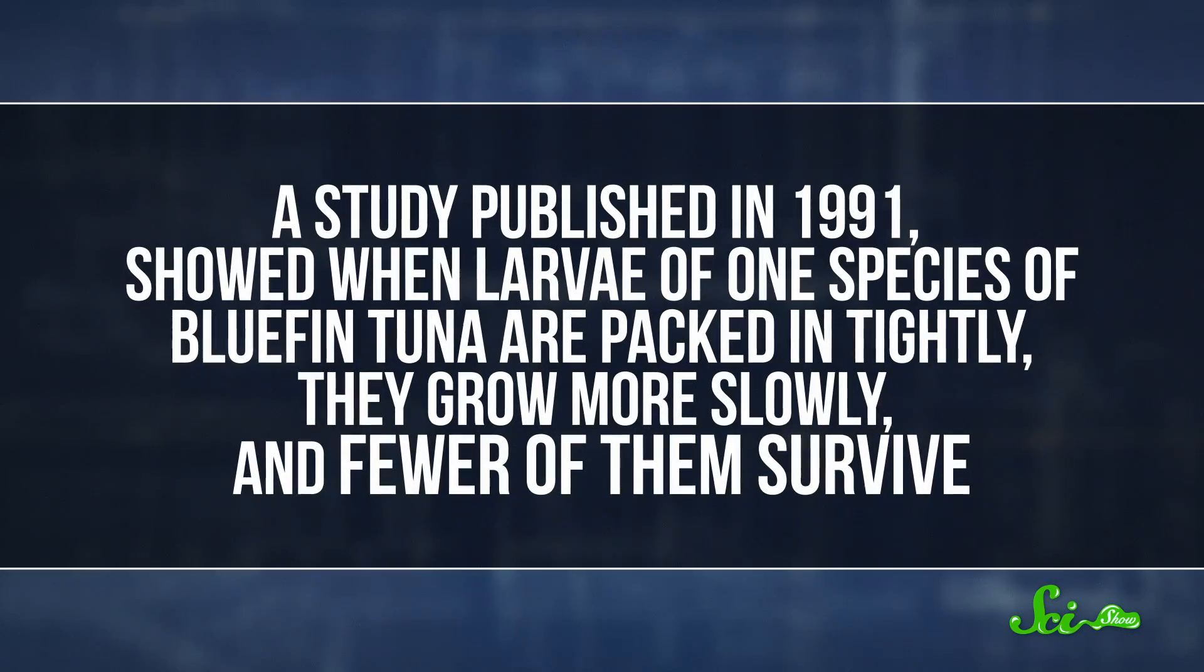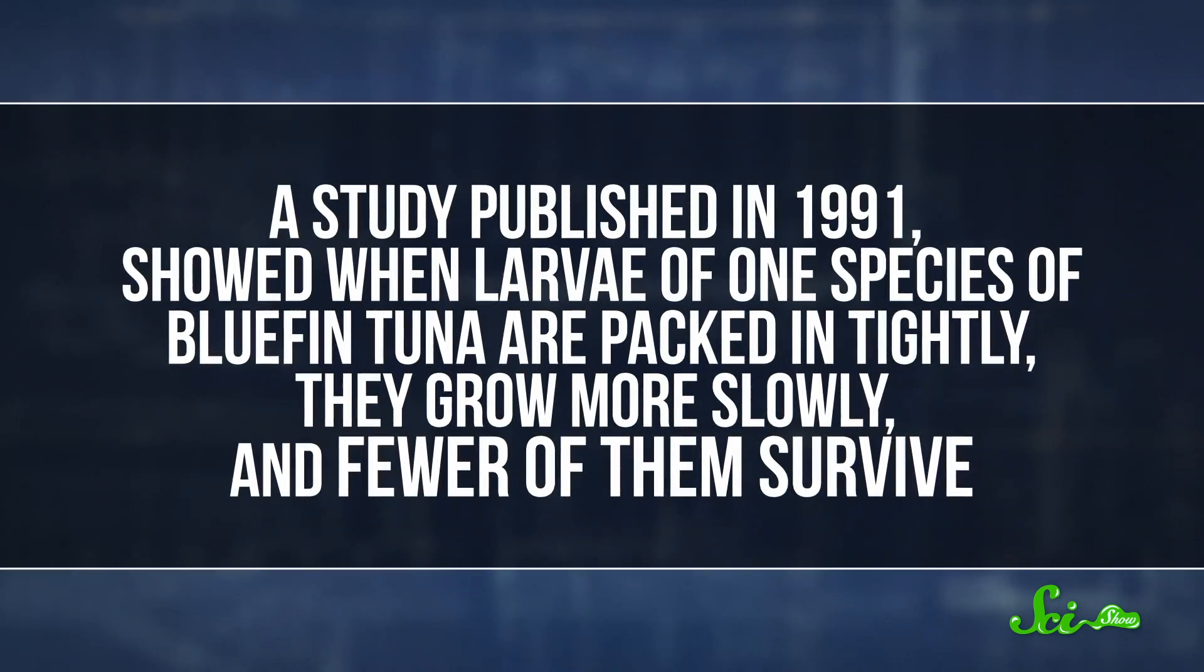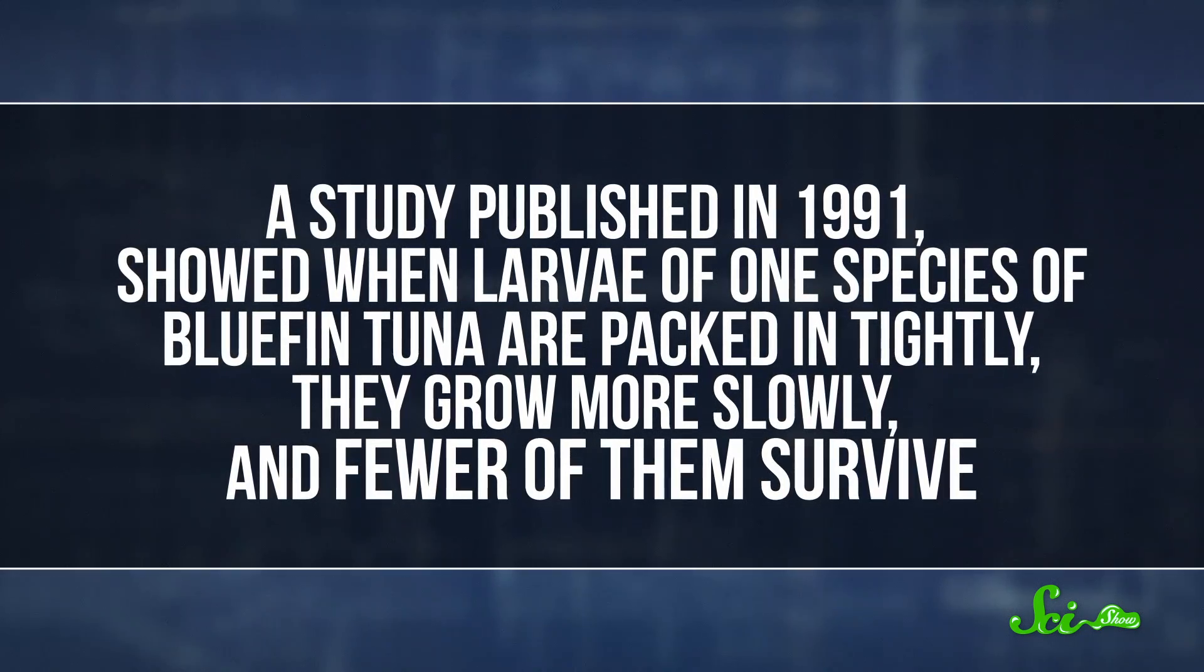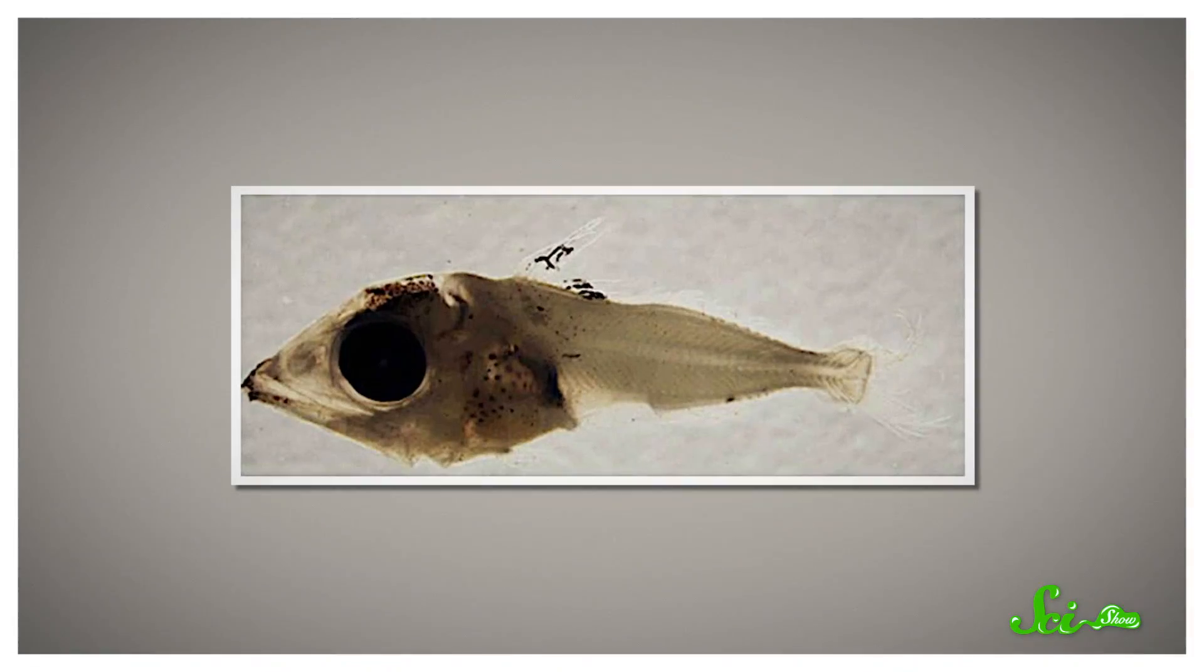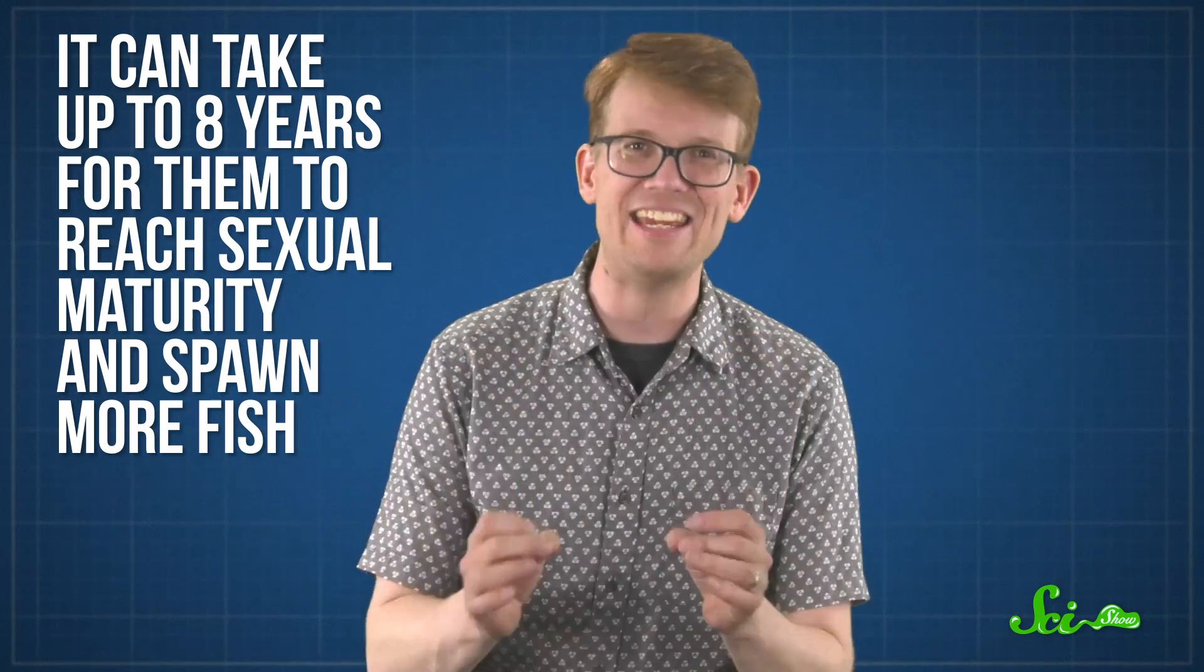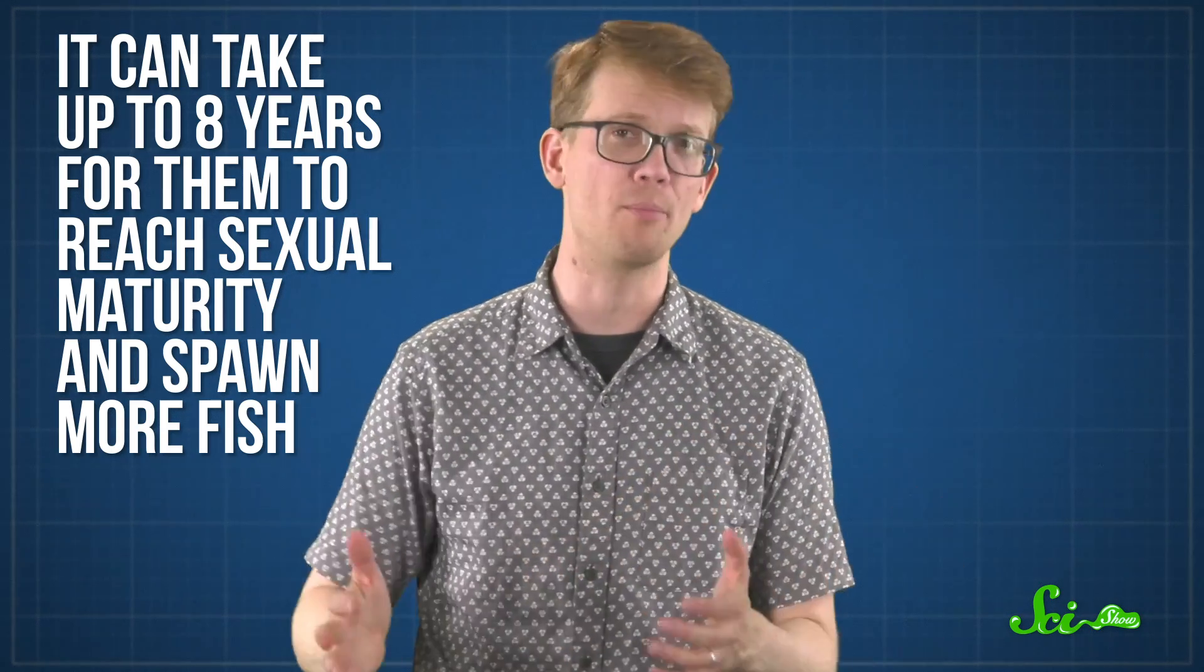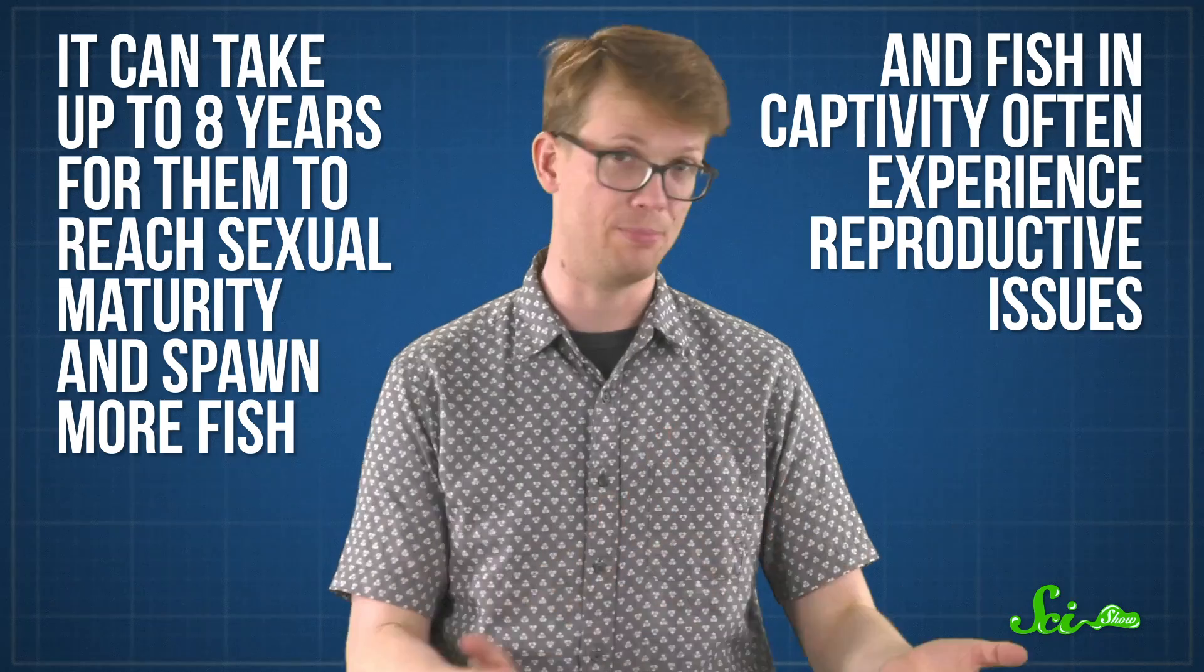But even as tiny, free-floating larvae, they're difficult to maintain. A study published in 1991, for example, showed that when larvae of one of the species of bluefin tuna are packed in tightly, they grow more slowly, and fewer of them survive. That study actually looked at conditions in the wild, but with an eye toward what would happen in a tank, though measures could also be taken to avoid such issues. Also, larvae may be little, but their heads take up most of their size, so they're like a little top-heavy. So tank conditions need to be just right to prevent them from literally sinking and actually getting hurt when they hit the bottom. Because of their size, it can take up to eight years for them to reach sexual maturity and spawn more fish. And fish in captivity often experience reproductive issues.